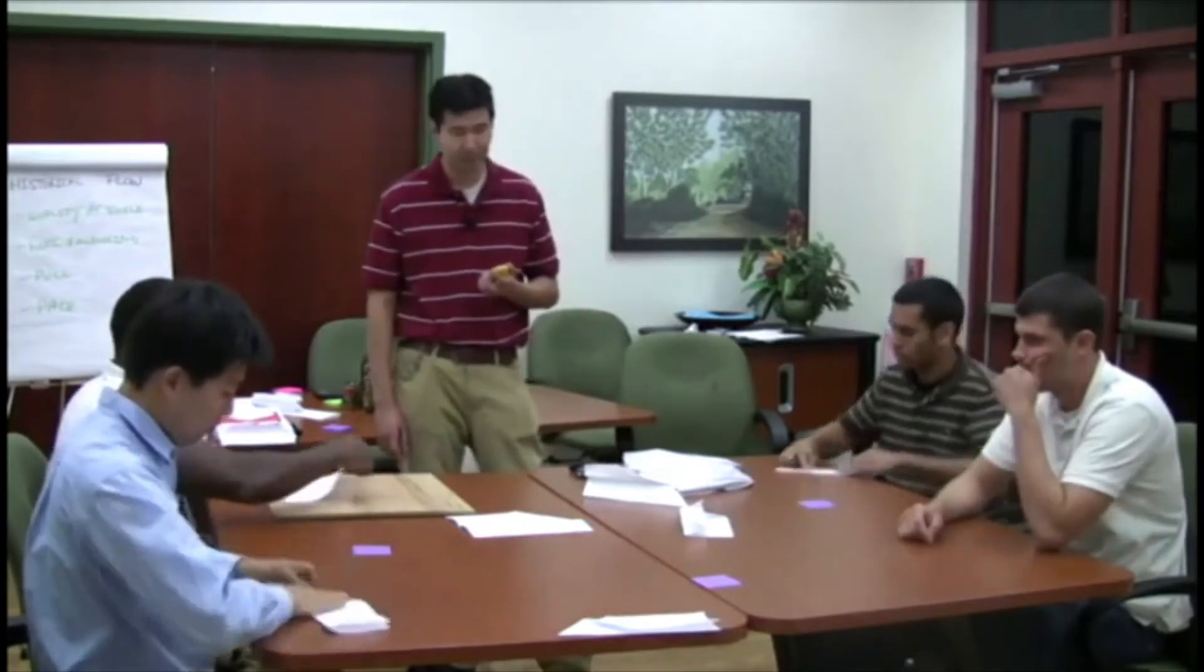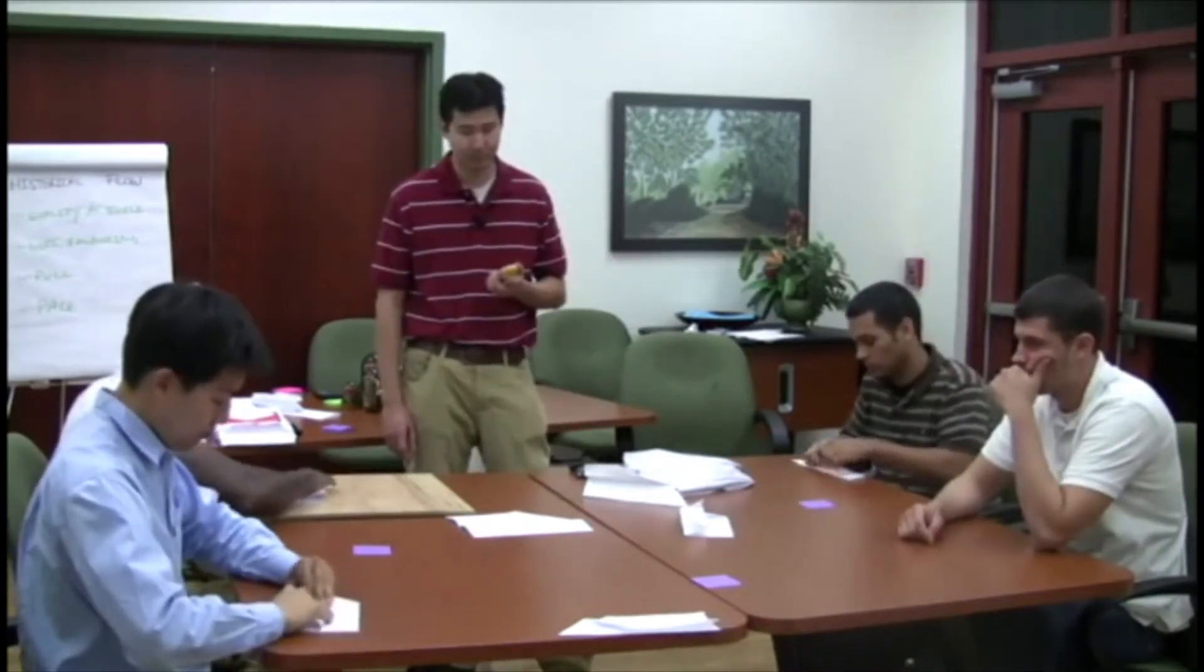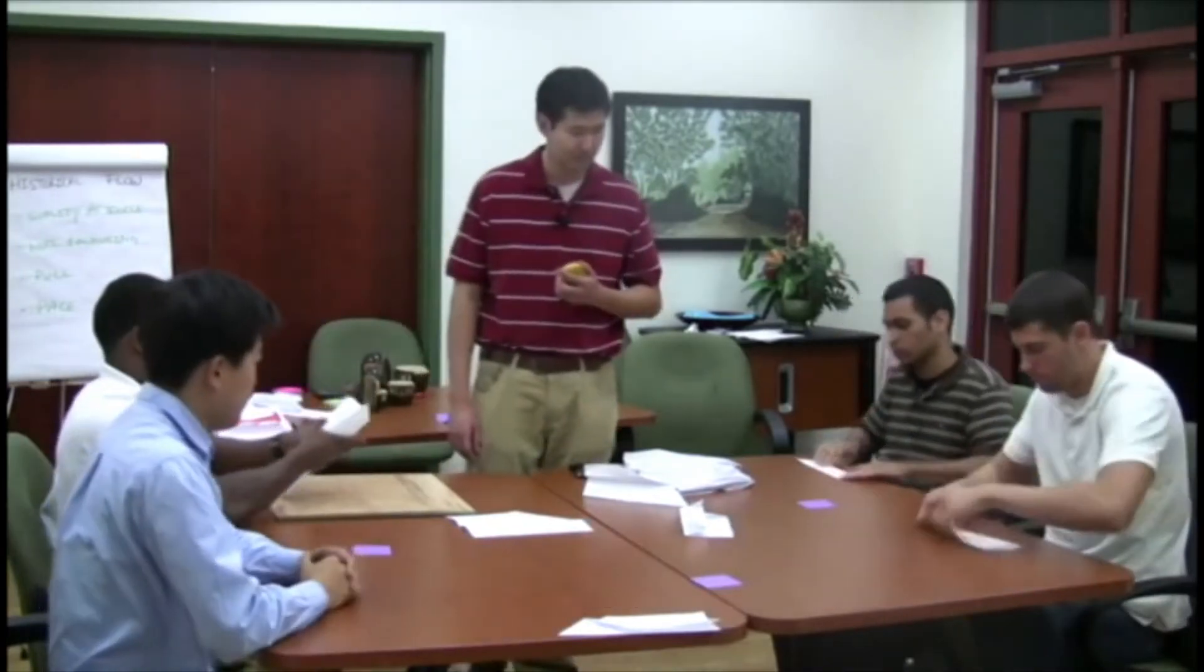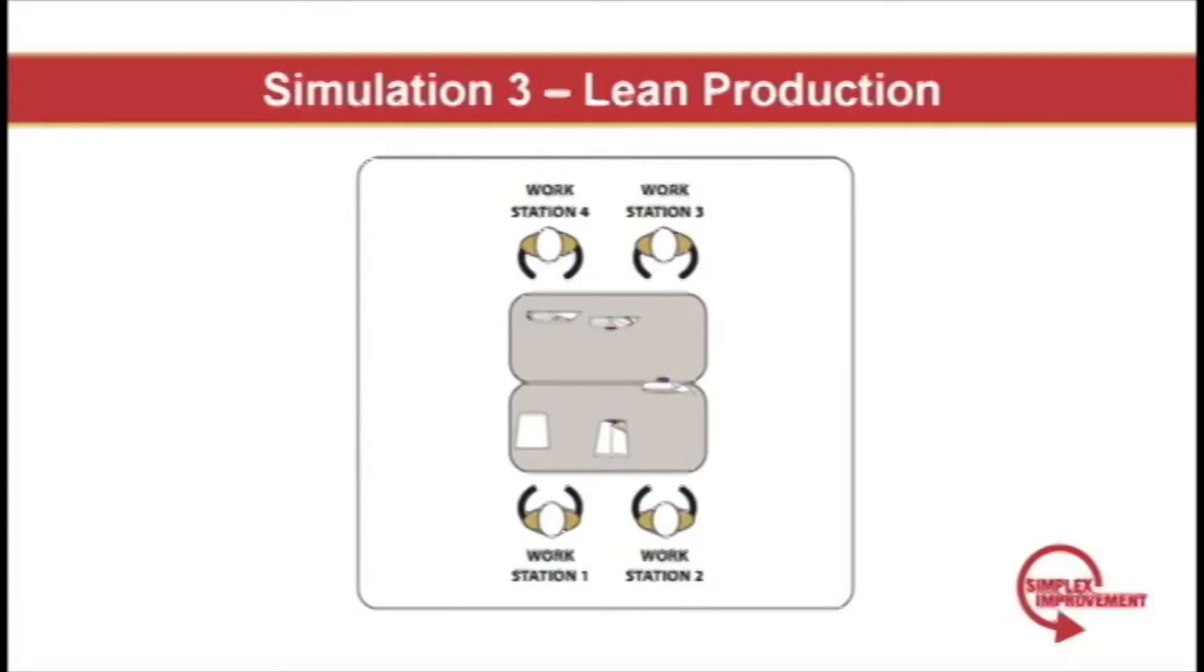This is called pull production. This is in contrast to push production you saw during the last run. This simple control eliminates the need for a manager as the pace and amount of production is totally dictated by how often the customer pulls a plane. Notice that with this control in place, the worst-case scenario can be three pieces of work in process at any given time.